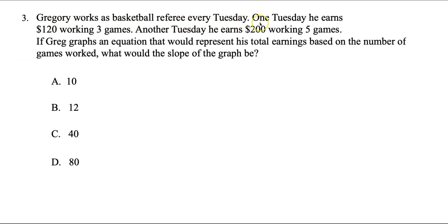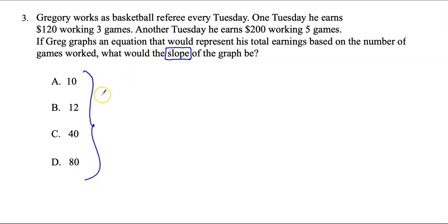Question 3. Gregory works as a basketball referee every Tuesday. One Tuesday he earns $120 working 3 games. Another Tuesday he earns $200 working 5 games. If Greg graphs the equation representing his total earnings based on the number of games worked, what would the slope be? Whenever you see the word slope with this type of problem, it's basically asking: what are Greg's earnings per game?